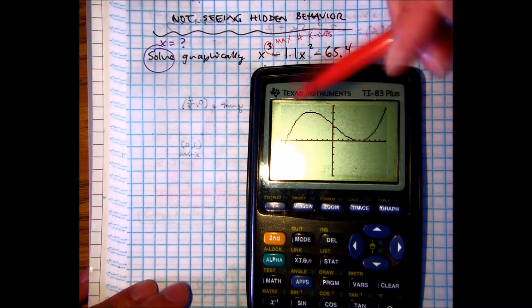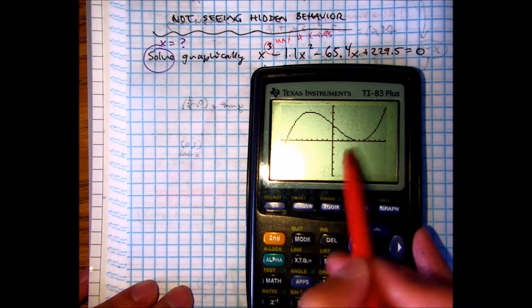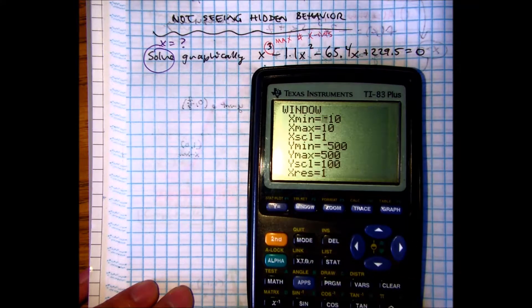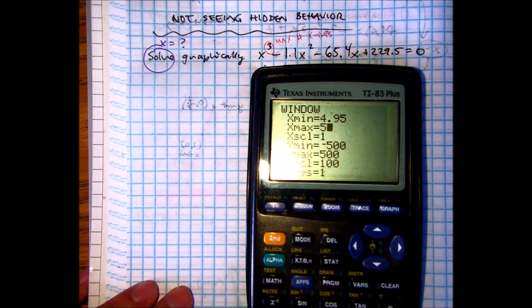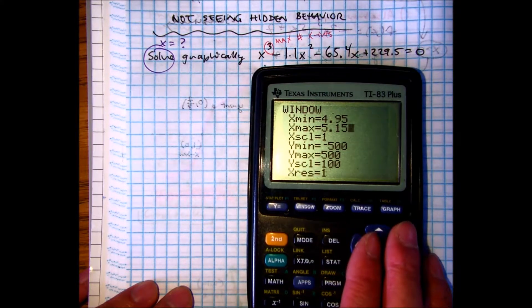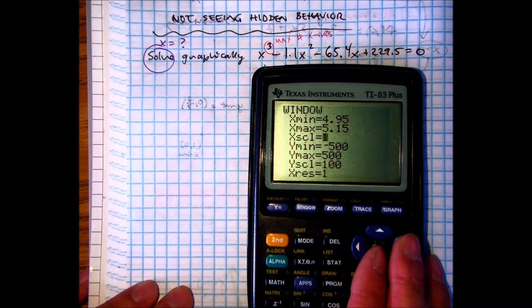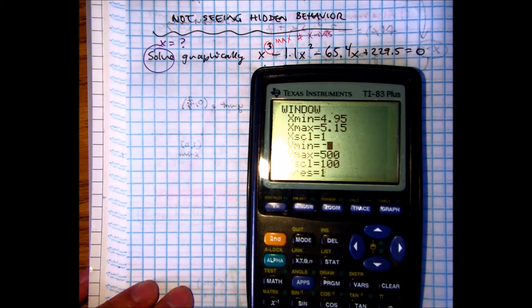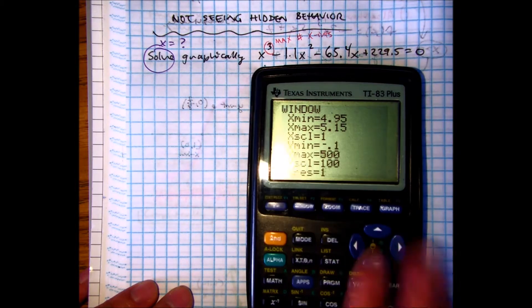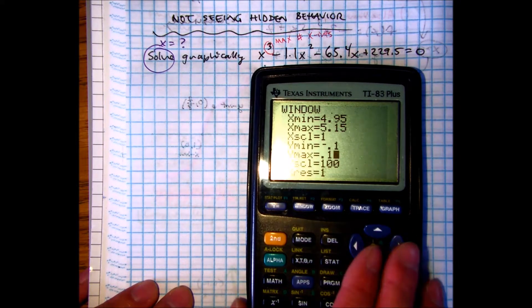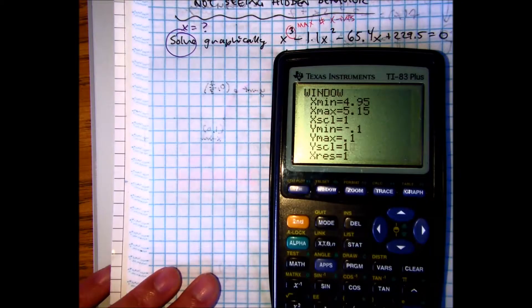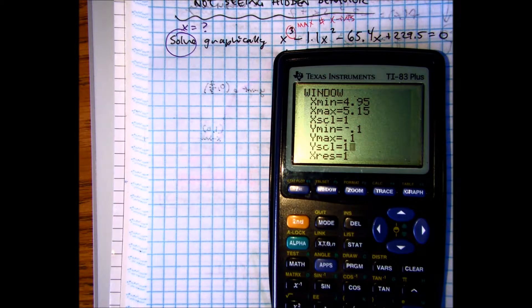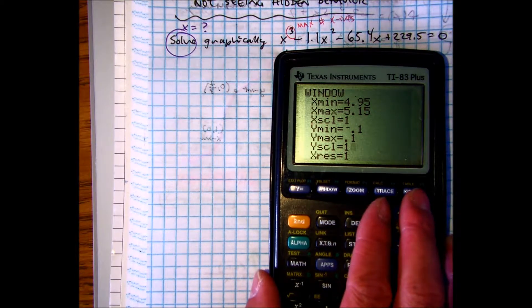Originally, we couldn't see the whole roller coaster. Now I kind of want to zoom in on this section. So let's change the window. 4.95, 5.15. And then you'll change this one to negative .1. Count by 1. Press graph.